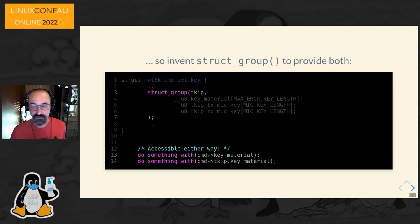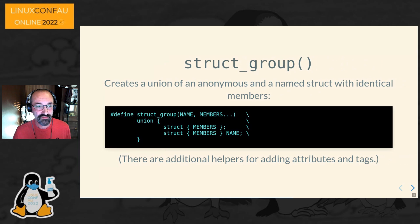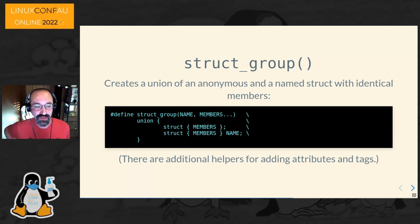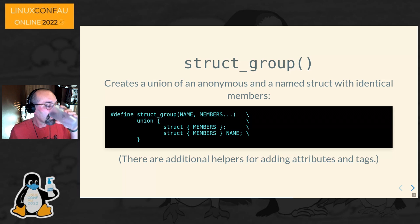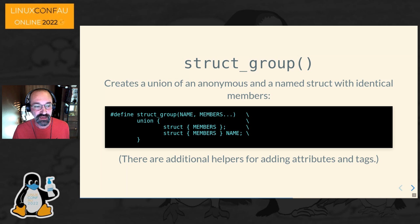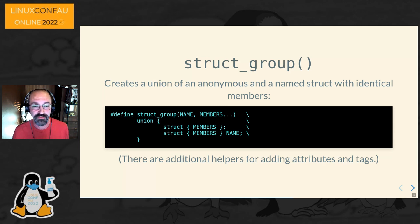This works through an interesting trick: struct_group is a macro that creates a union of both an anonymous struct and a named structure with identical members, so they're basically aliases to each other. This works really well. There are some additional helpers for adding attributes and tags to the created union and the structures within them. But this solves the problem of getting a single name that we can use to refer to a group of sub-members within a structure without disrupting the rest of the kernel.